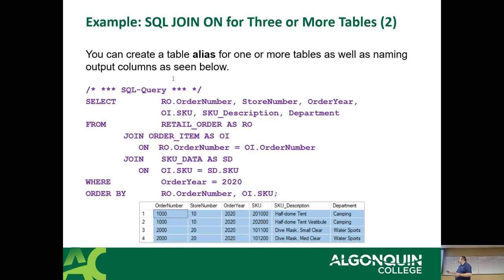One takeaway from the multi-table join slides: the joins are getting more complex, but they're all doing the exact same thing I just did. You'll notice they're putting in aliases for each of the tables - it's because they just don't want to keep typing the long table name every time. So if you alias the table, you have to use the alias everywhere else in that query.